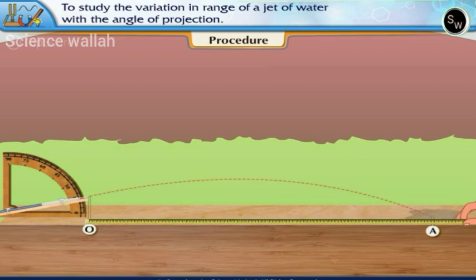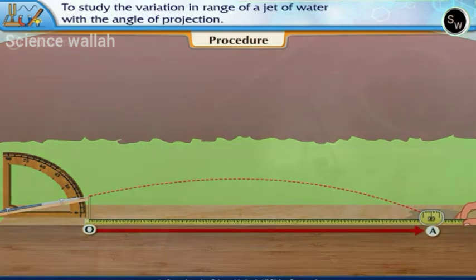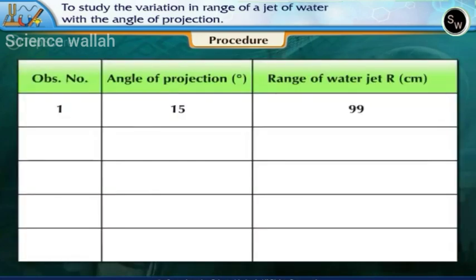Measure the distance OA. This is the range of the water jet R. Record the observations.